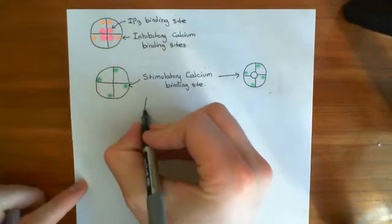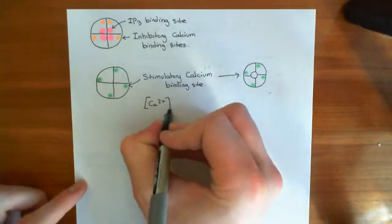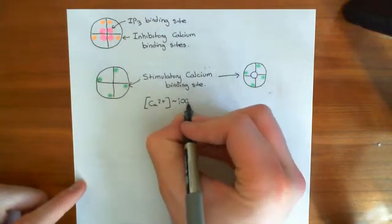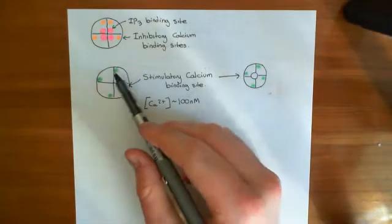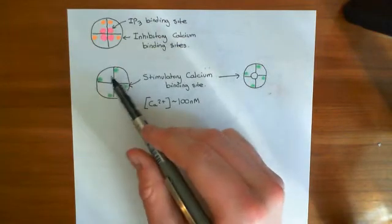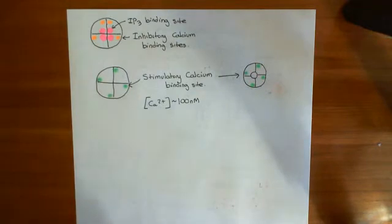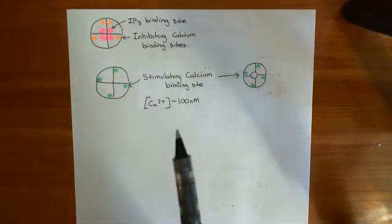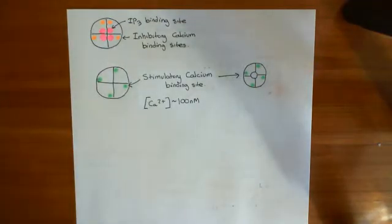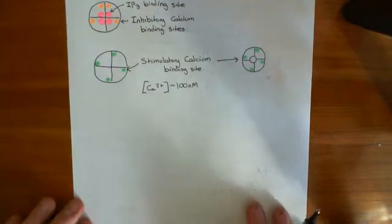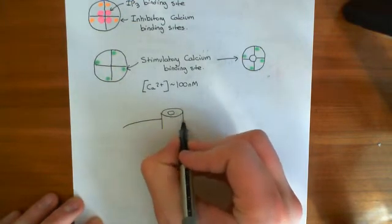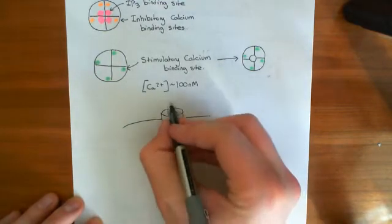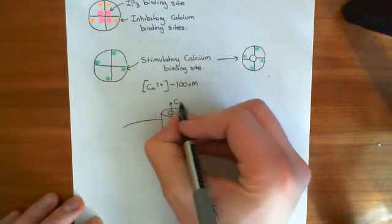There is calcium in the cytoplasm — at a very low concentration of around 100 nanomolar — so when IP3 receptors have been activated by IP3 binding, those four calcium ions can bind to the stimulatory sites and cause the channel to open. For all intents and purposes, IP3 does cause the IP3 receptor to open, but it is important to understand the distinction at a more detailed mechanistic level. The net result is that when IP3 levels go up, these IP3 receptors open and release calcium from the endoplasmic reticulum.